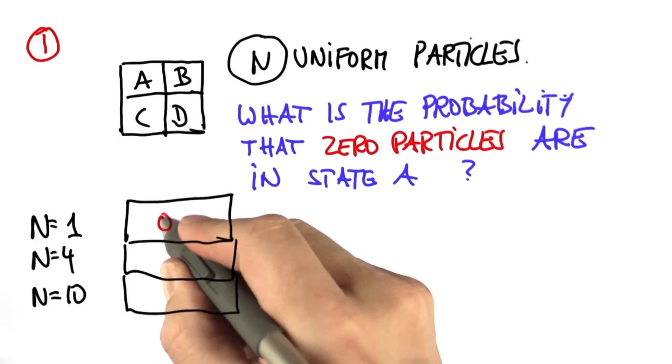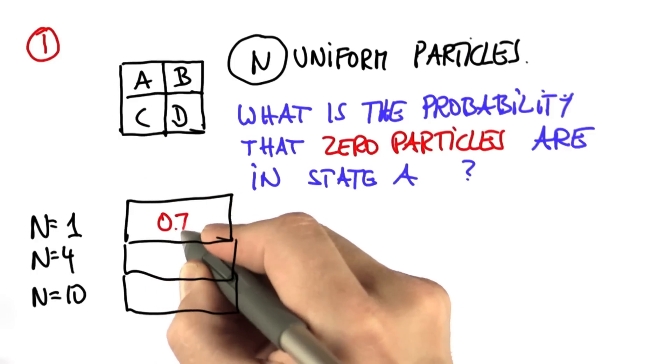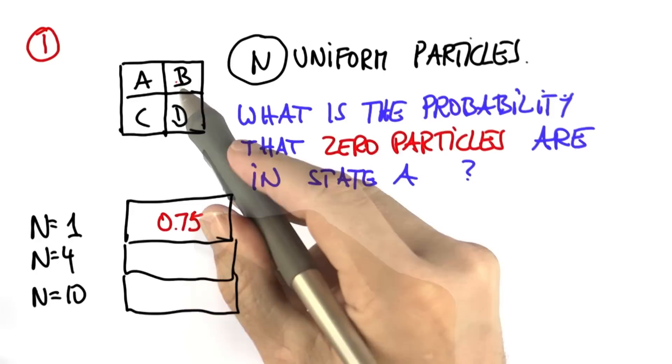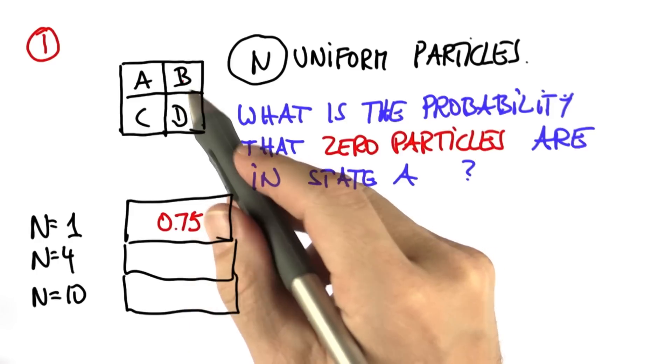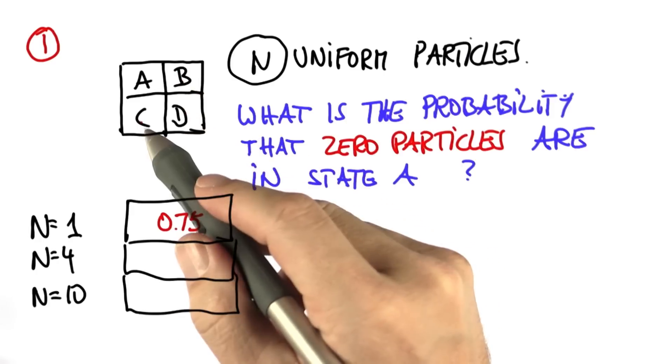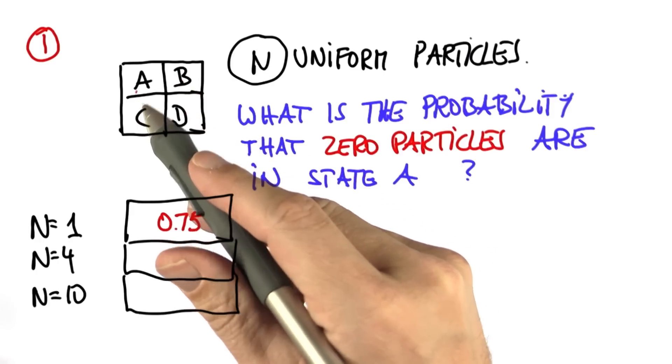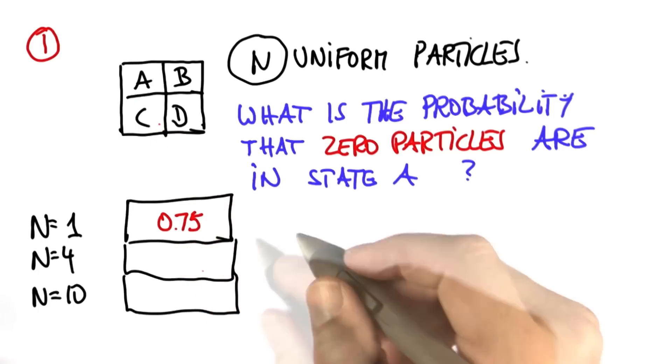For n equals 1, it's 0.75 — with a three-quarter chance the particles will find themselves in b, d, or c. And it's only a quarter chance that the particle is in a.